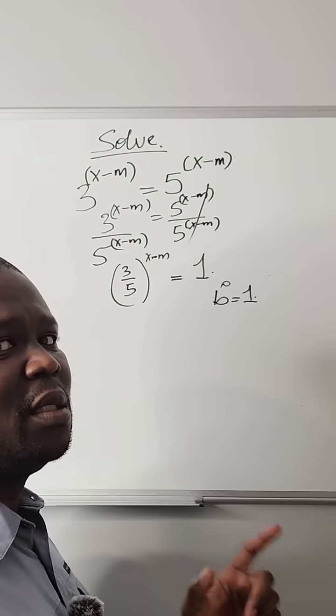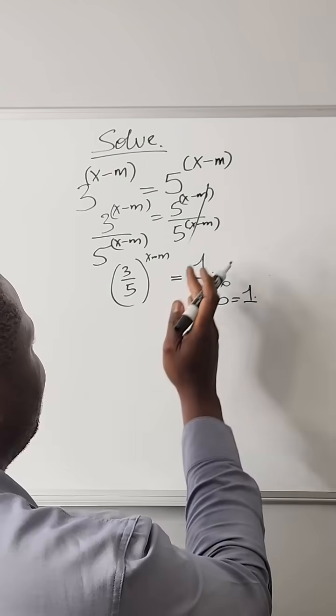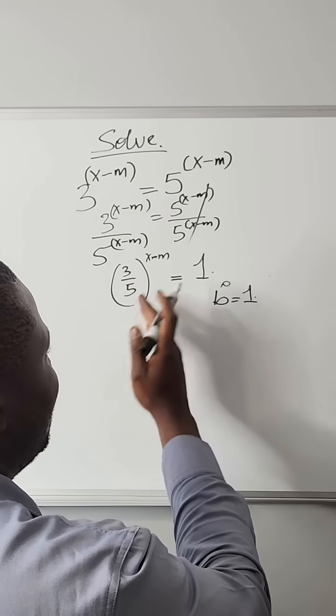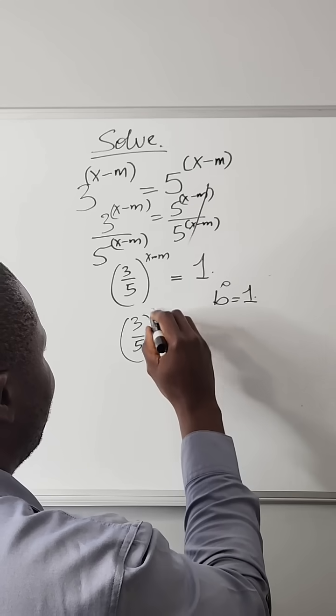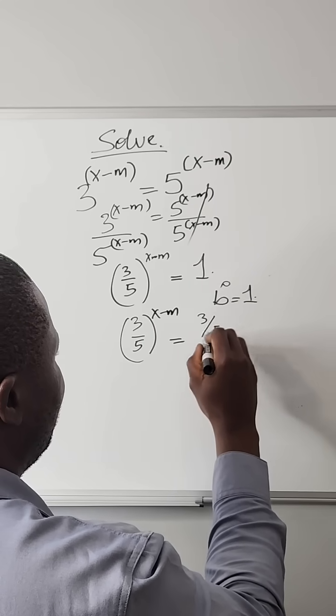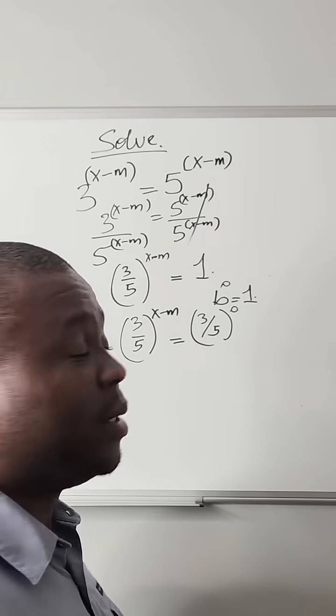We're trying to make the bases to be the same so that we can equate the powers. So to make the base of the right-hand side equal to the base of the left-hand side, it becomes 3 over 5 raised to power x minus m equals 3 over 5 raised to power 0, because anything raised to power 0 is equal to 1.